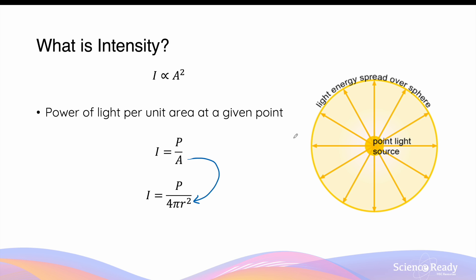So in this diagram, if we were to measure the intensity at a given point which is r meters from the light source, we'll take the initial power of the light source, P, divided by 4πr². Of course, r here will be in meters.